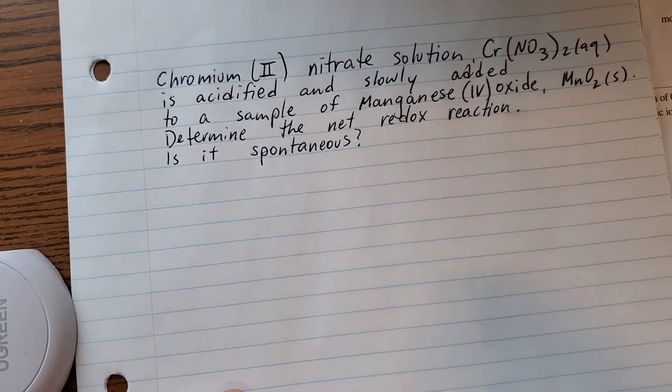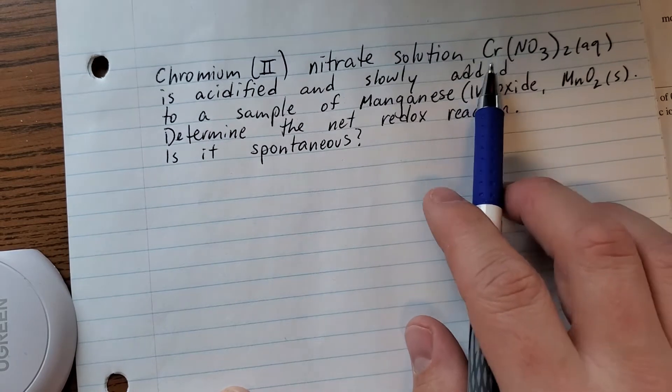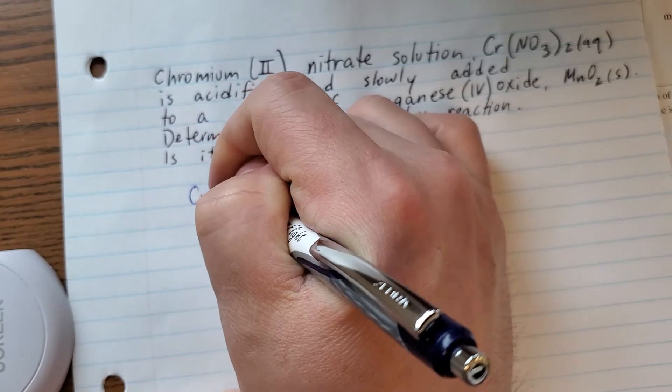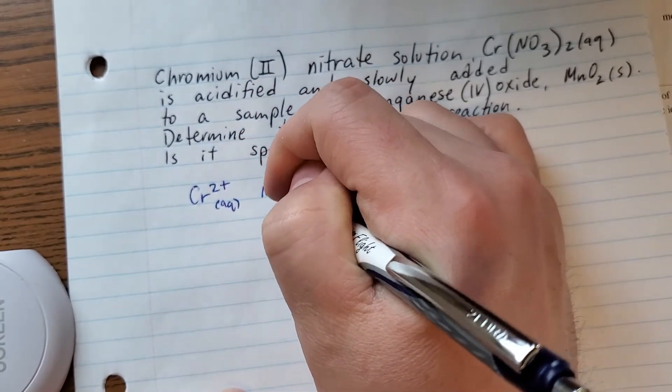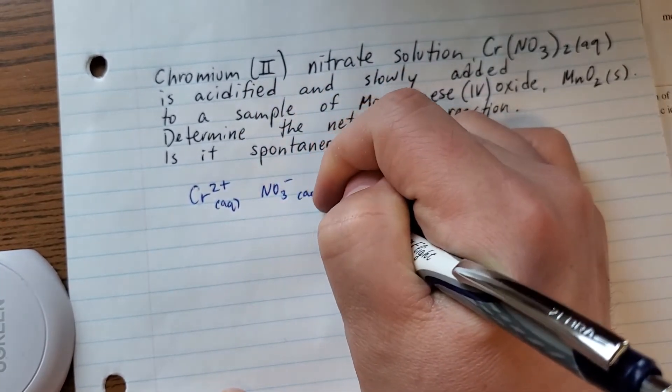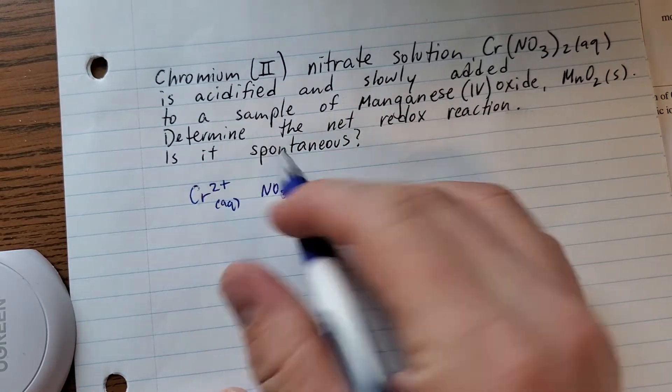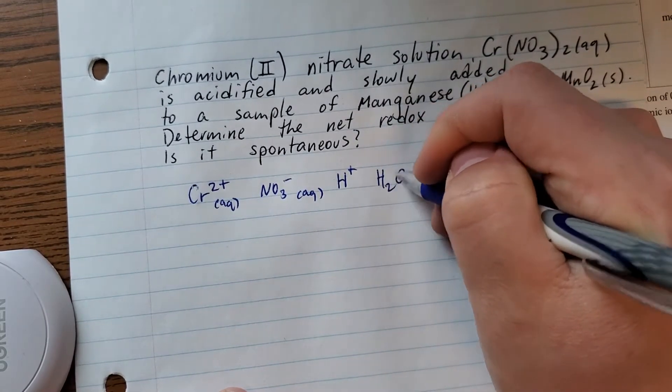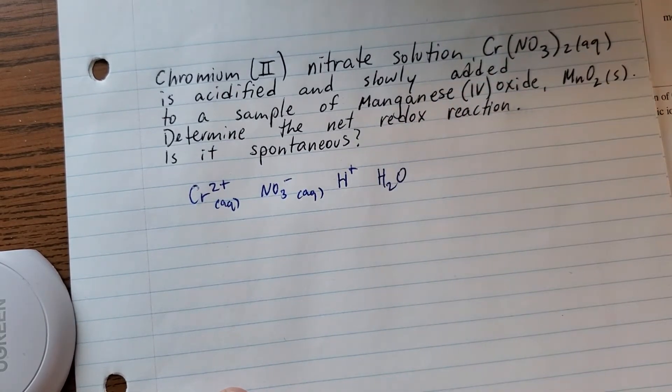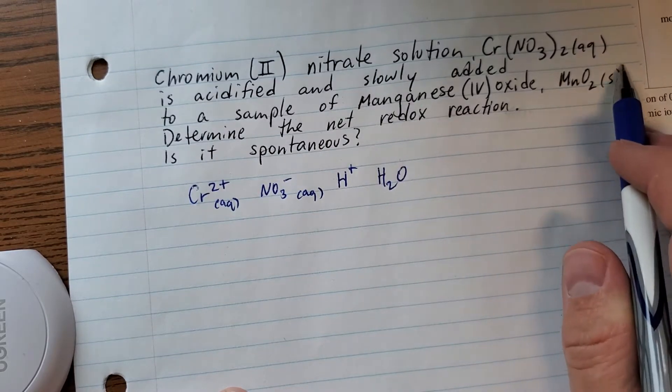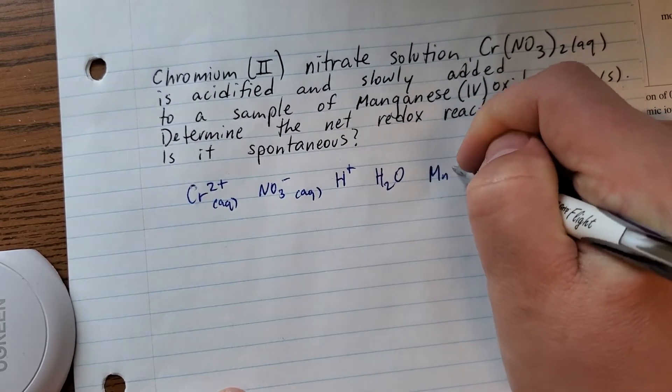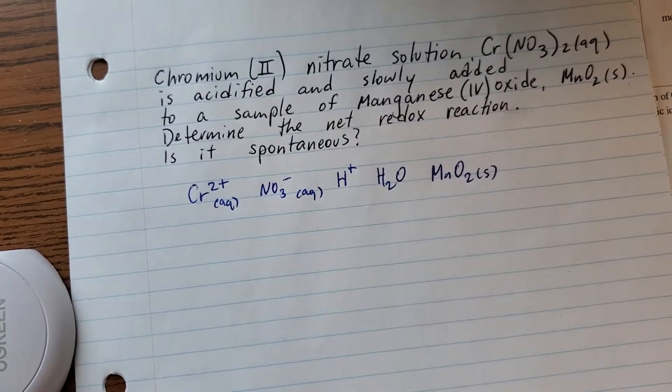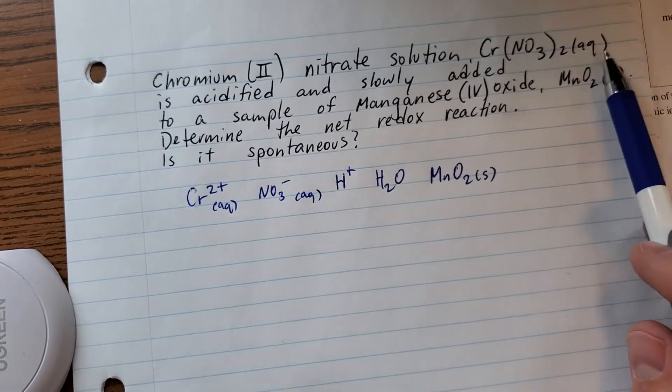Step one is to write down all the reactants you have present. This is an aqueous ionic compound, which means these ions are dissociated. So you have chromium and you have nitrate. It's acidified, so you have H+. All of these are in solution, so you have water. This manganese(IV) oxide is solid—do not dissociate that. It's just a chunk of manganese oxide. That's totally different than when it's in solution.